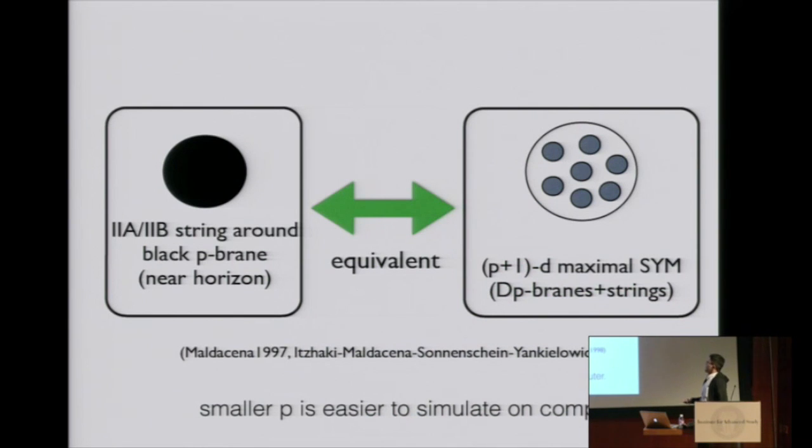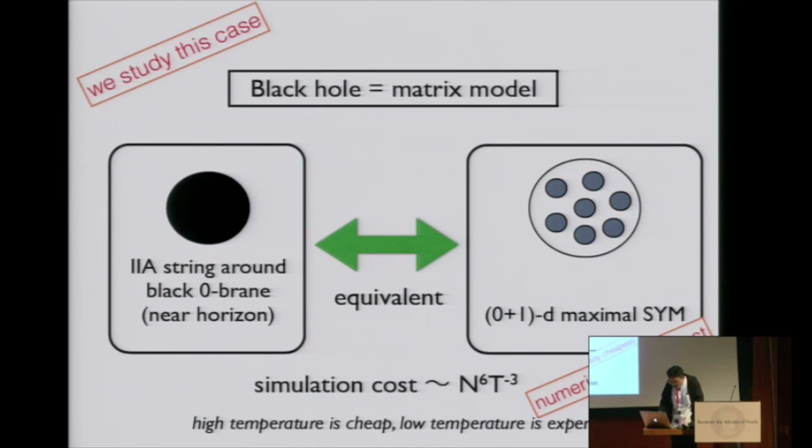Very fortunately, gauge-gravity duality is expected to be true even when the dimension is less than four. Type IIA or IIB string around black p-brane background should be equivalent to p+1 dimensional maximal super Yang-Mills, which is obtained by dimensional reduction from four-dimensional N=4. This p can be two or one or zero. Smaller p is easier to simulate on computer. So we study the simplest case, p equals zero.